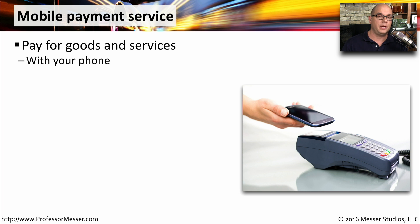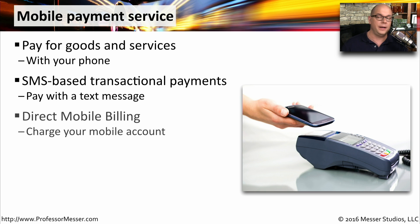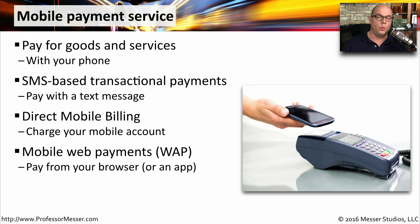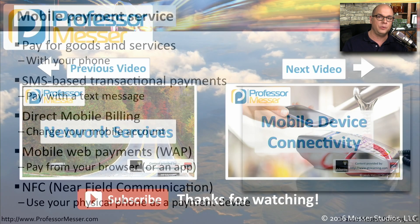Our mobile devices are also becoming very standardized ways to pay for goods and services. We can use an SMS-based system, for example, to send an SMS message to send money or to receive money on our phone. We might also be using direct mobile billing, where we're purchasing a product but billing it to our mobile account rather than to a checking account or a credit card account. I've used mobile web payments, or WAP, to be able to pay for taxi rides — I simply have an application where I put in the number of the taxi, and then it charges everything using the application. And one of the latest ways to purchase goods and services is with NFC, or Near Field Communication, where we just need to get our phone near the payment device, and it's able to proceed with the credit card transaction.